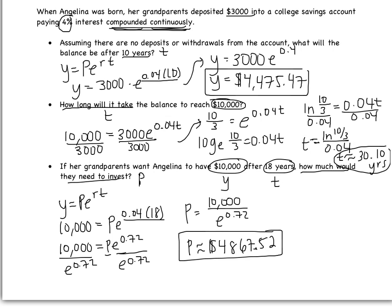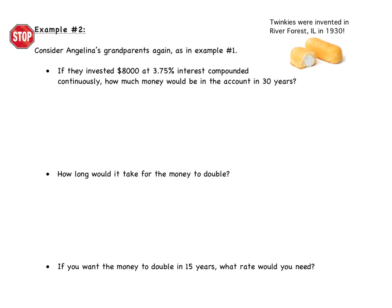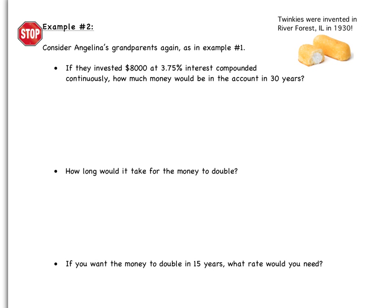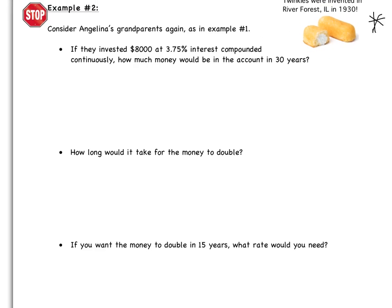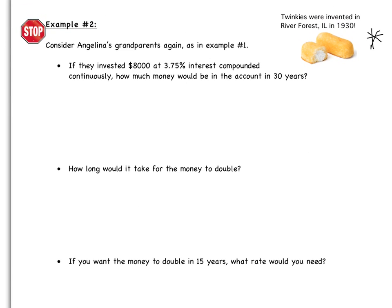Let's look at the next example. Quick trivia: did you know that Twinkies were invented in Illinois — in River Forest, Illinois in 1930? Here's the example I'd like you to try. You need to try all four problems on the page. Pause the video, take 10 minutes, and do these four on your own. When you come back, I will go over the answers.